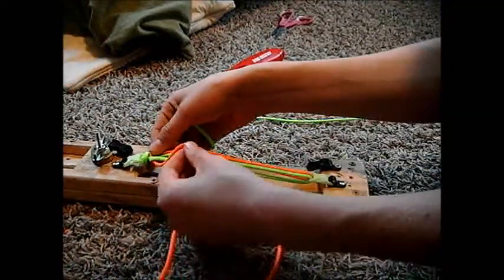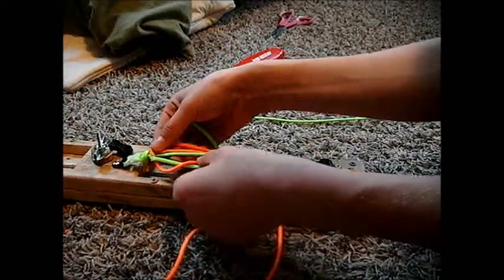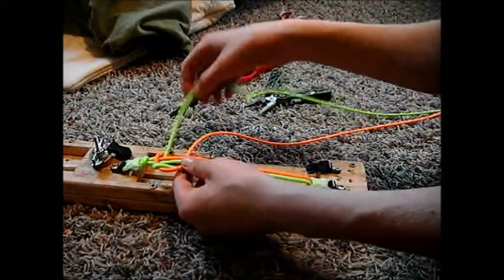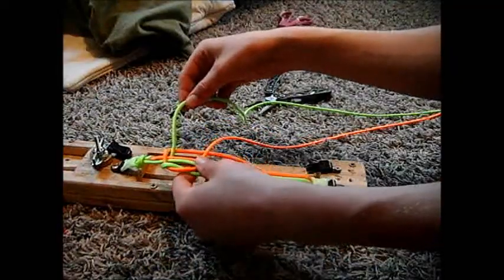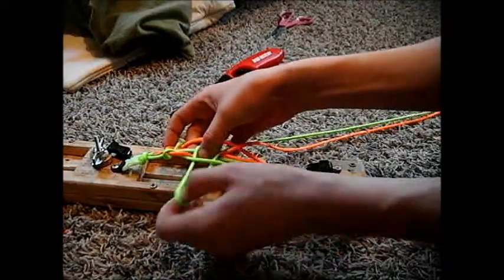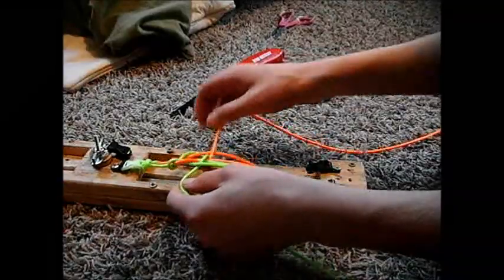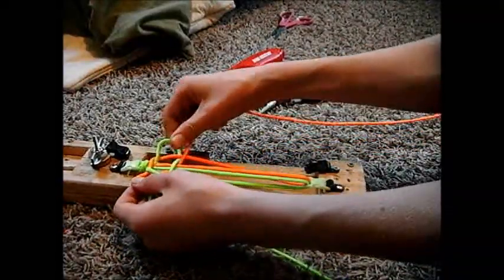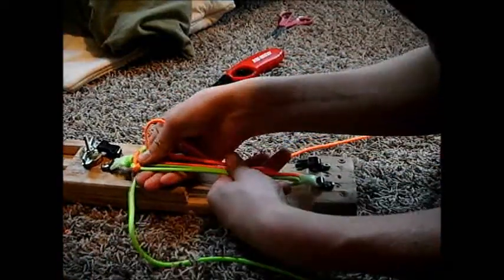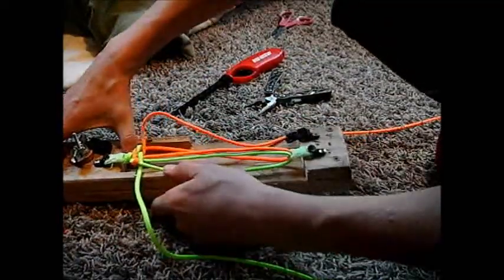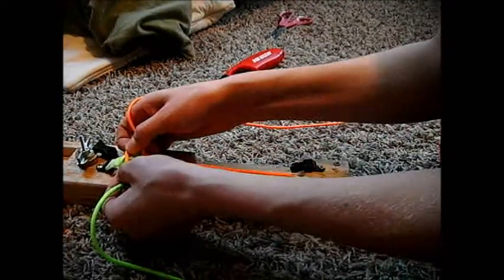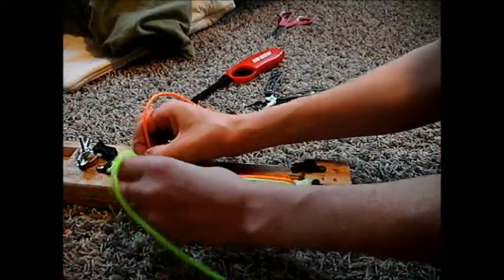So now you take your left one again and bring it over the first strand, under these two, and back over the last one. Now you take your other one, bring it under that one, and cross it over these ends of paracord and bring it through. Now you can just bring that back up and tighten it again. Then you just tighten everything and make sure it's tight, like I said, because it'll make it nicer. Kind of pull on these, make sure that they're really tight.